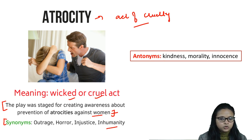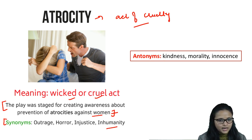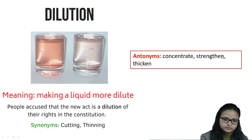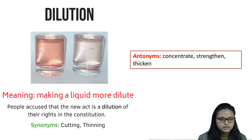Antonyms for atrocity will be kindness — because when you are cruel, the opposite is kind — morality, and innocence. The second word is 'dilution.' Dilution is a noun because it ends with -tion.